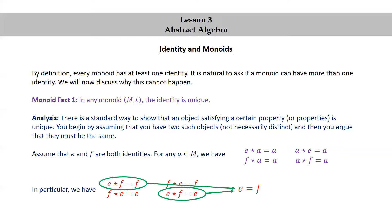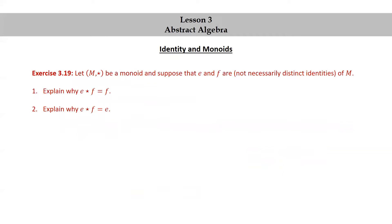Let's finish with one more exercise. Let M★ be a monoid and suppose E and F are not necessarily distinct identities of M. Explain why E★F = F, and explain why E★F = E. E★F = F because E is an identity. E★F = E because F is an identity.